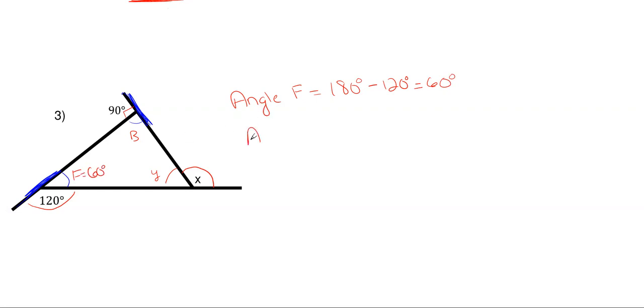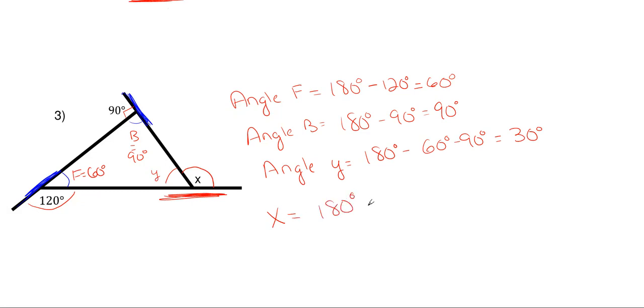And then let's repeat that for angle b. Angle b is a little bit easier because it is a right angle. So we have 180 degrees minus 90 degrees gives us 90 degrees. And then let's get angle y. Angle y will just be 180 degrees minus the internal angles of 60 degrees minus 90 degrees, and that gives us a total of 30 degrees for angle y. And then finally, to get my x answer, because it is a straight line with angle y, we can just use straight line angle of 180 degrees minus the 30 degrees, which gives us a total of 150 degrees there.